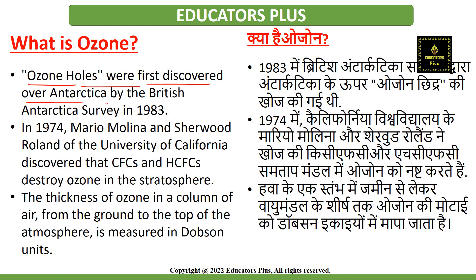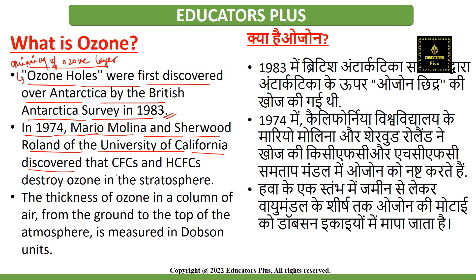The first ozone hole was discovered over Antarctica by the British Antarctic Survey in 1983. Levels of ozone were dropping very fast, causing the ozone layer to become thin and holes to form. In 1974, Mario Molina and Sherwood Rowland of the University of California discovered that chlorofluorocarbons and hydrochlorofluorocarbons were destroying ozone in the stratosphere.